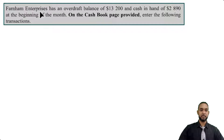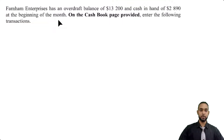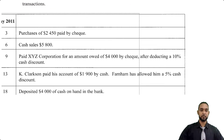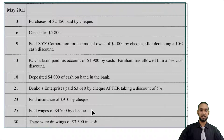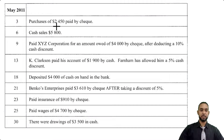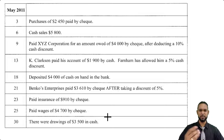So we have Farnham Enterprises, which has an overdraft balance of $13,200 and cash in hand of $2,890 at the beginning of the month. On the cashbook page provided, we need to enter the following transactions. Instead of reading through all of them first, let's just pull up the cashbook and go through the transactions one by one, so I don't have to do double work — it'll be a bit more efficient and make this video a little shorter as well.